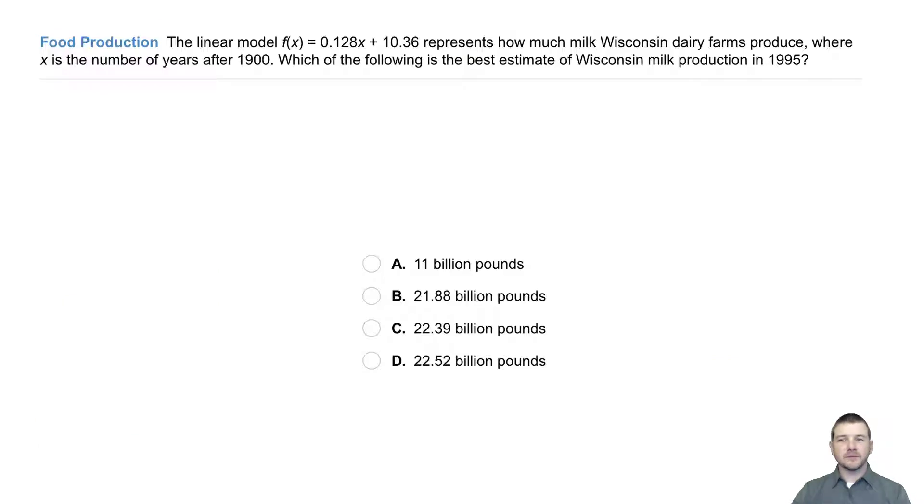Your turn. Food production. The linear model f(x) = 0.128x + 10.36 represents how much milk Wisconsin dairy farms produce, where x is the number of years after 1900. Which of the following is the best estimate of Wisconsin milk production in 1995?